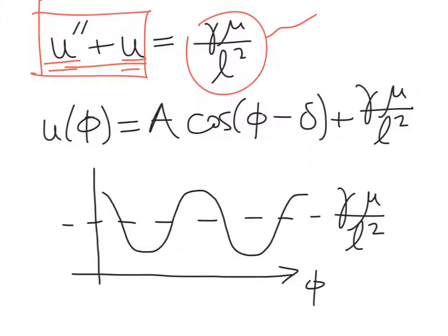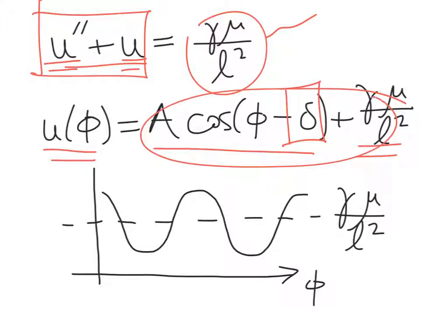Well, if we assume a solution of the form u of phi equals A cosine of phi minus delta, where delta is some as-yet-determined angle, plus the constant, what we find is that this solution for u as a function of phi exactly satisfies this differential equation.